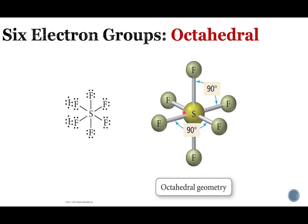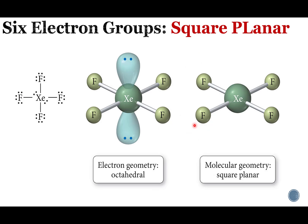We still have equatorial and axial atoms in the octahedral geometry. The square is our equatorial, right on the equator, and we have two fluorines that are axial. For six electron group species, the lone pairs are going to go axial. If we have two lone pairs in the axial positions, the electron geometry is octahedral, and the molecular geometry is square planar — it's flat and makes a square if we connect the dots.